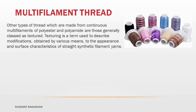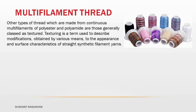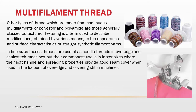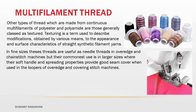Multi-filament thread. Other types of thread which are made from continuous filaments of polyester and polyamide are those generally classed as textured. Texturing is a term used to describe modifications obtained by various means to the appearance and surface characteristics of straight synthetic filament yarns. In fine sizes, these threads are useful as needle threads in overedge and chain stitch machines.